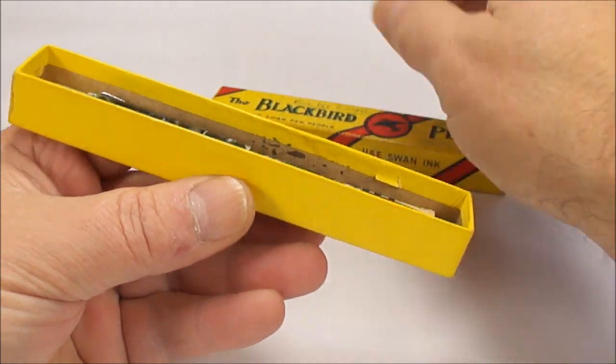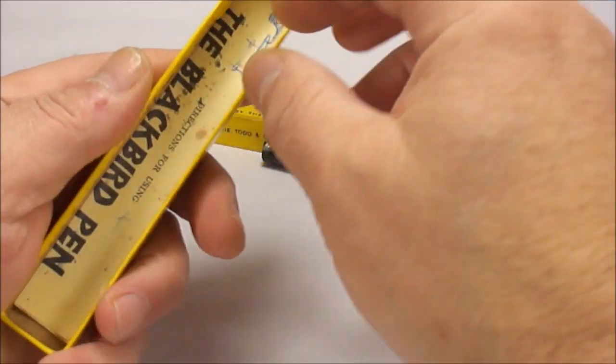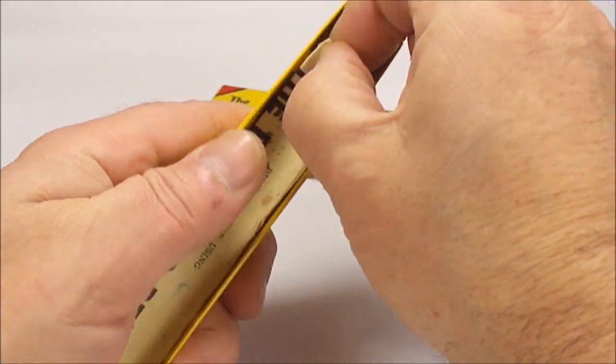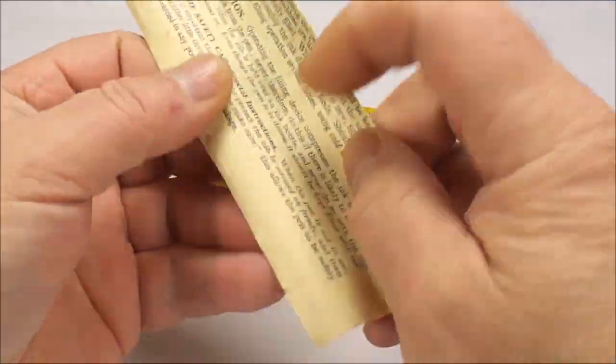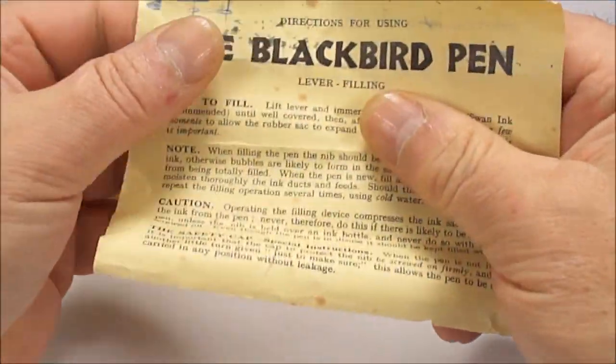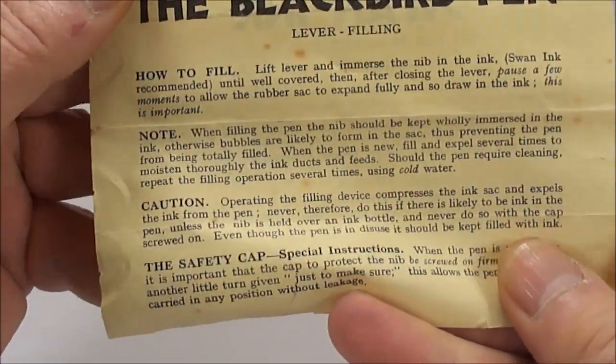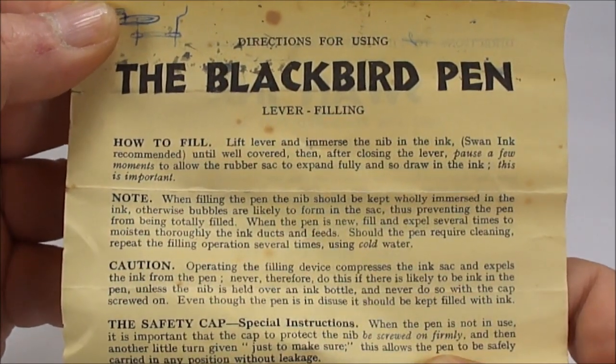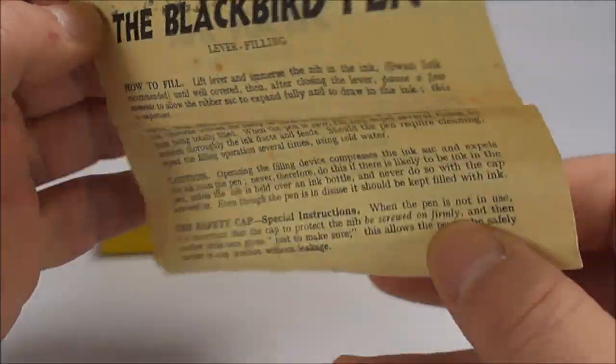So let's take the pen out first of all. What we've also got inside, which is a little bit difficult to get out, is the original instructions, which once again is quite nice to find. So let's look at the instructions there, directions for using the Blackbird Pen Lever Filling, and then it tells you how to fill the pen.